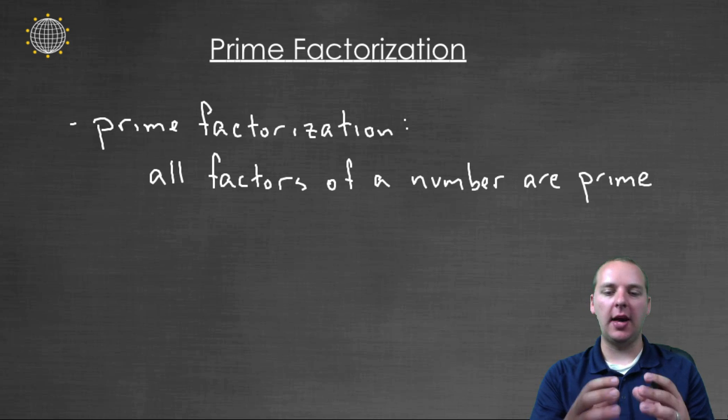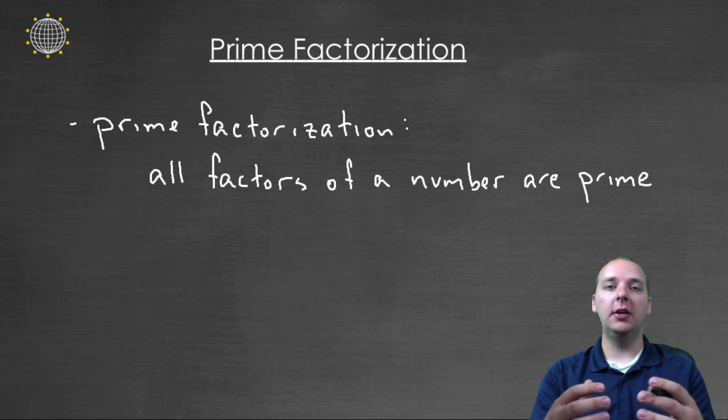A prime factorization is when you have a number and you factor it, and then you look at those individual factors and you see if they can be factored themselves. And you continually factor again and again and again, breaking these down into finer and finer pieces until all the factors cannot be broken down anymore. In other words, you break it down to a fundamental level where all the factors of a number are prime.